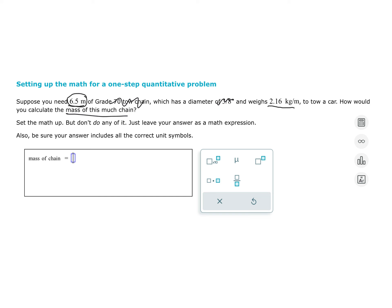I would start with a number that has one unit assigned to it. So I would start with 6.5 meters. And we want to convert this into a mass, kilograms. So the only other thing that we can use is the fact that we know there's 2.16 kilograms per meter, and we want meters to cancel out.